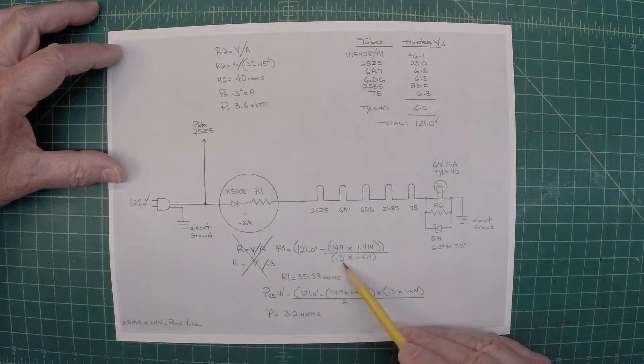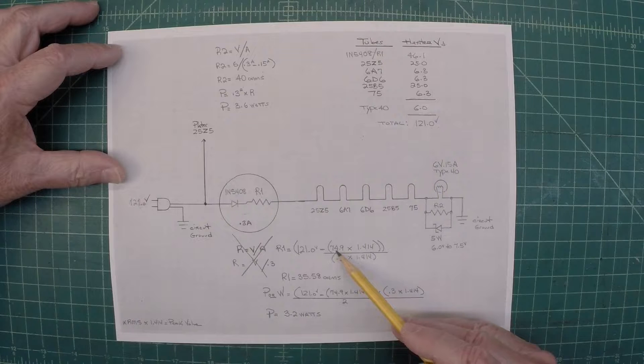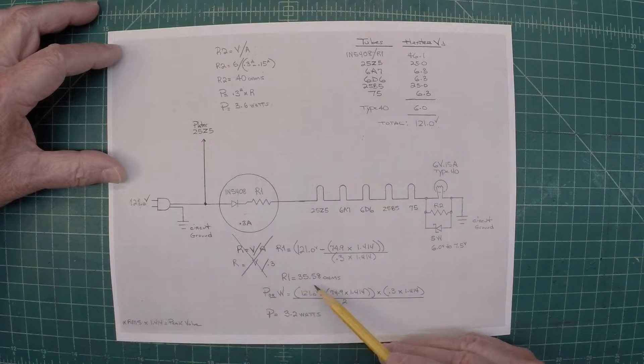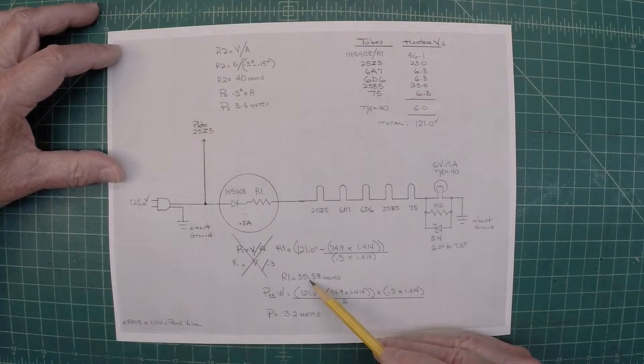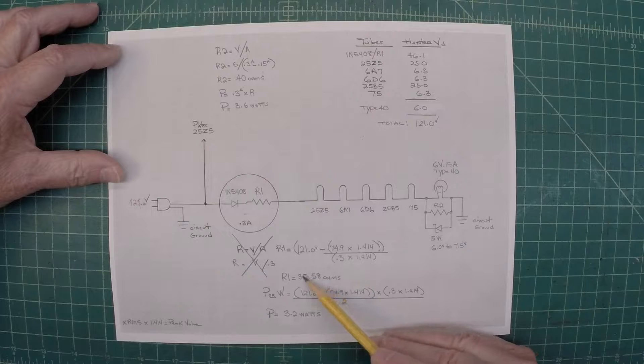So just using Ohm's law, taking this top number divided by the second number here, R1 will come out to just north of 35 ohms. And that's why I selected 35 ohms for R1.